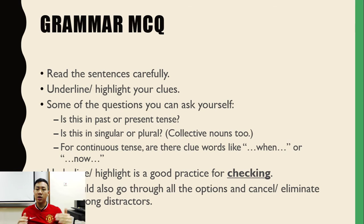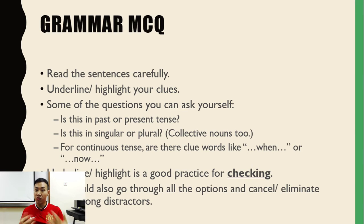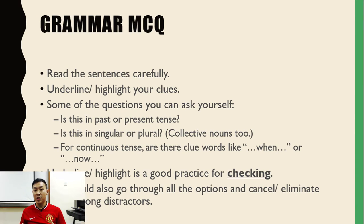For continuous tense, look for clue words like 'when.' For example: 'I was watching TV when the doorbell rang' — two things happening simultaneously, one ongoing while the other occurred. Compare this to 'I watched TV when the doorbell rang,' which changes the meaning entirely. Also, the word 'now' in direct speech usually signals the present continuous tense.